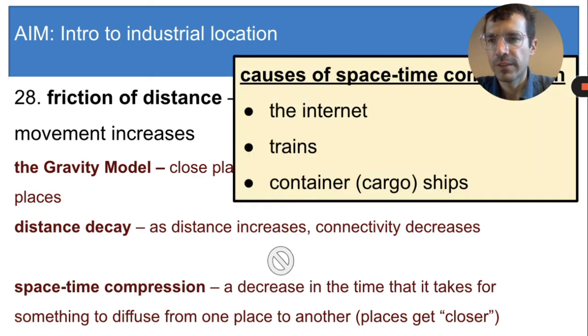Some technologies that contribute to space-time compression are the internet, trains, and container ships. All three of these things make movement quick and easy, and they reduce rather than increase the costs incurred by traveling over long distances. For example, businesses can now use the internet to send information across long distances without incurring any extra costs. So these technologies are causing friction of distance to be less and less true.